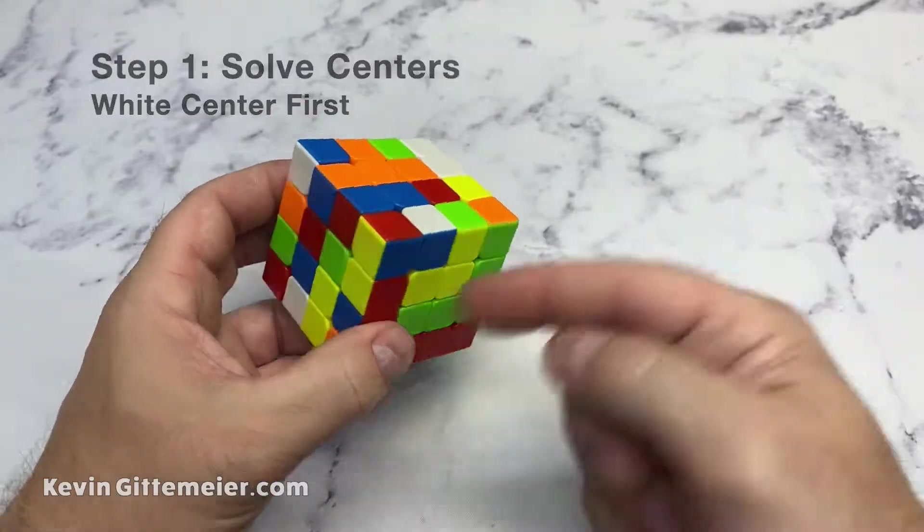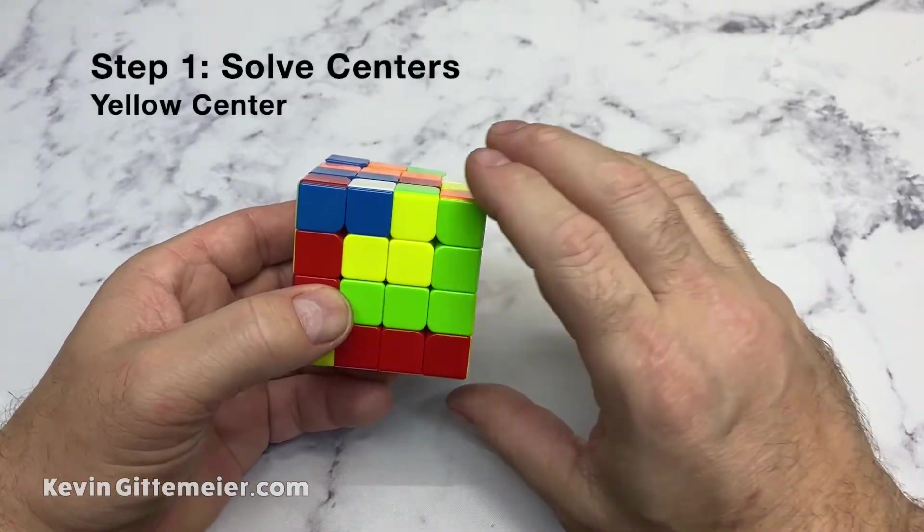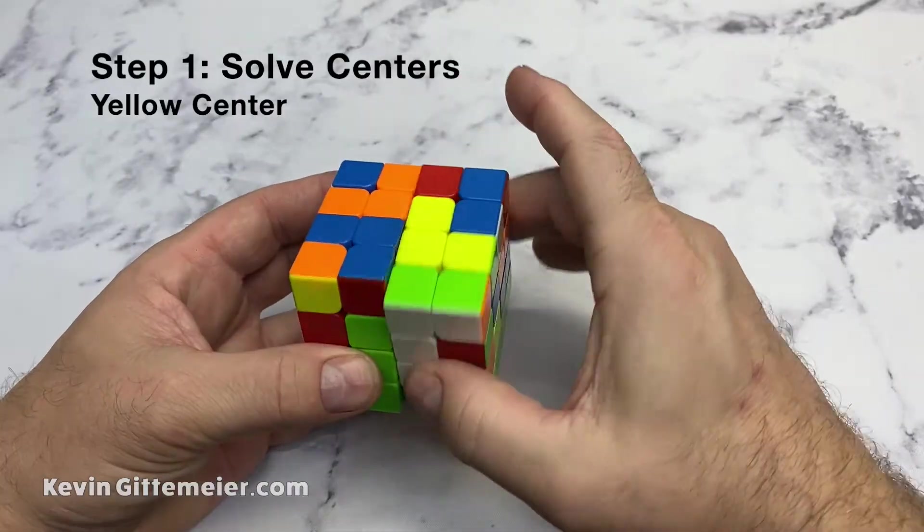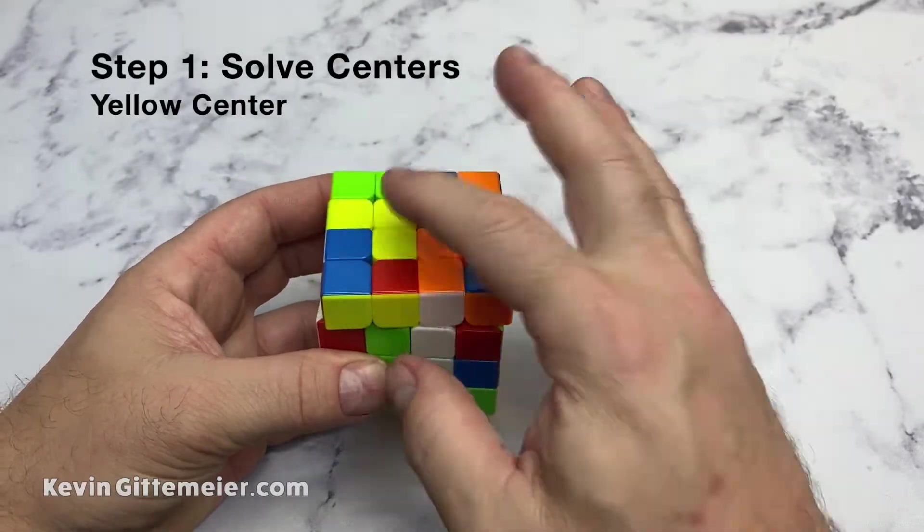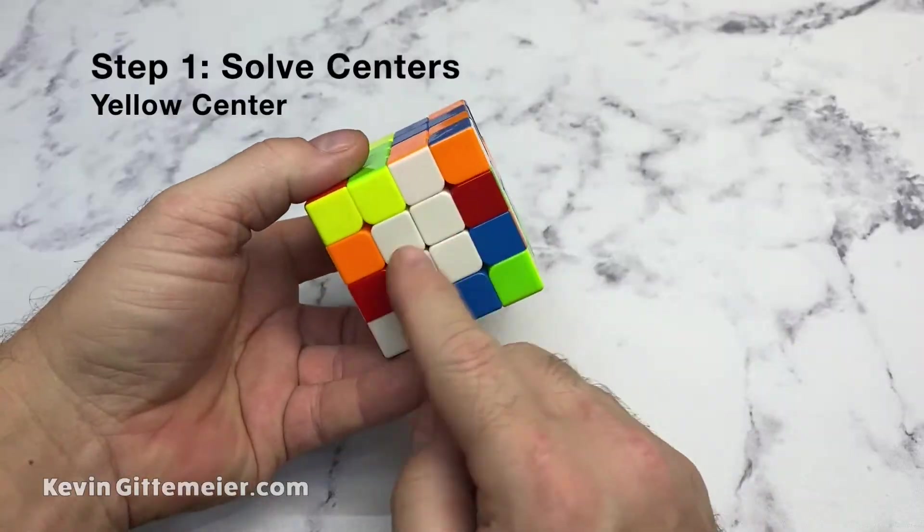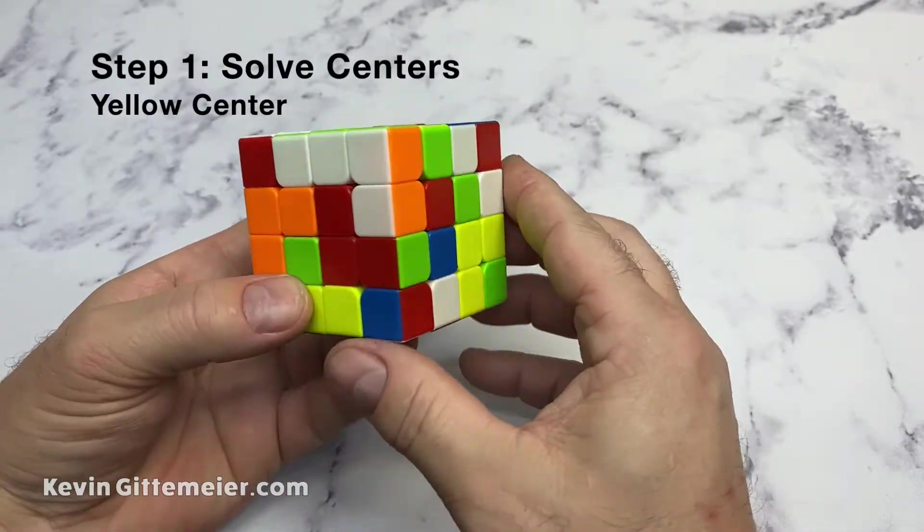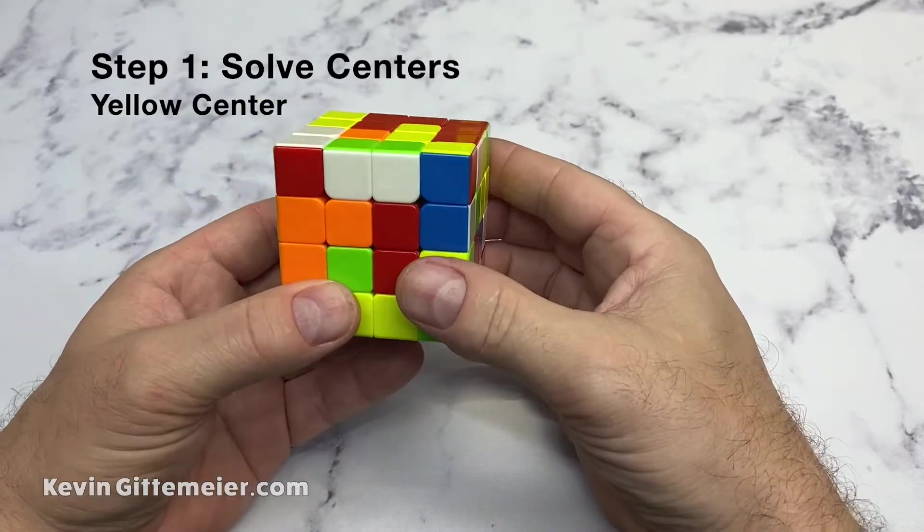I put my white solved center on the bottom, and I look for yellow center pieces. Here I've got a bar, so I've got to move it to the top without messing this up. So I move that, slice that bar up, move it over, and then when I slice back, that restores my white center. So now I'm looking for two more yellows to form a bar.